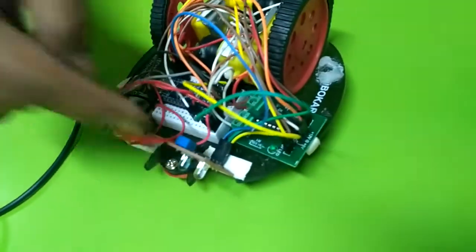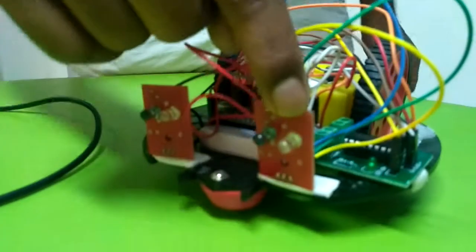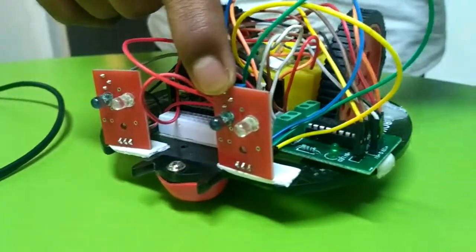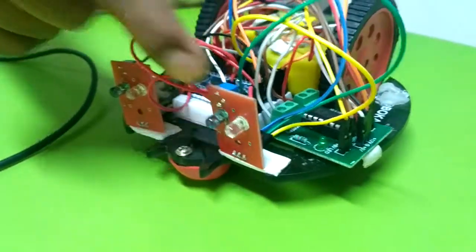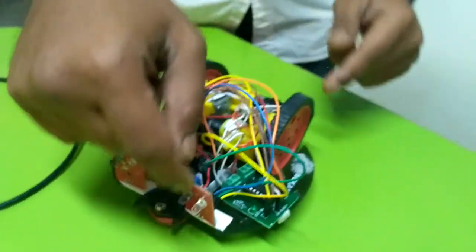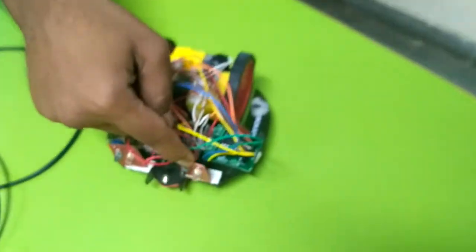And these two sensors, actually in the sensor there are three terminals in both. One is for ground, another one is for the Arduino's terminals, it's adjacent on that. And the next one is ground and one is power supply.